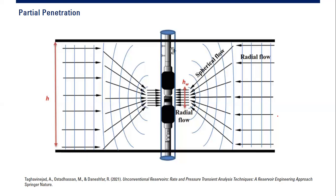If you have a very thin reservoir — maybe just several feet — you can perforate all the thickness of the reservoir, especially if you don't have a gas cap or aquifer bottom water. But in many cases we only do partial penetration, or limited entry, because we do not want to perforate all the thickness of the reservoir.